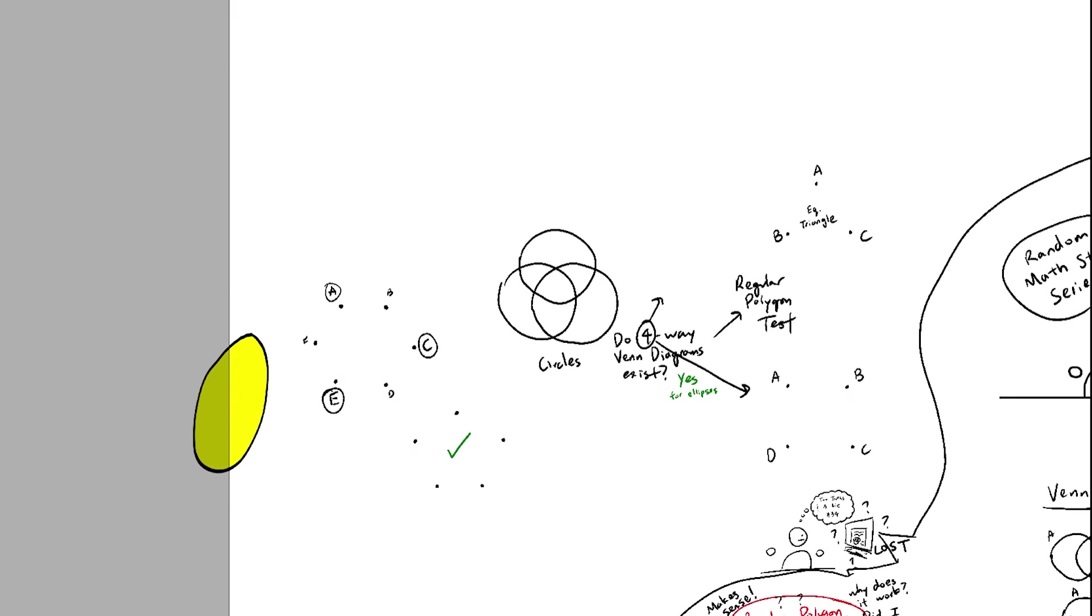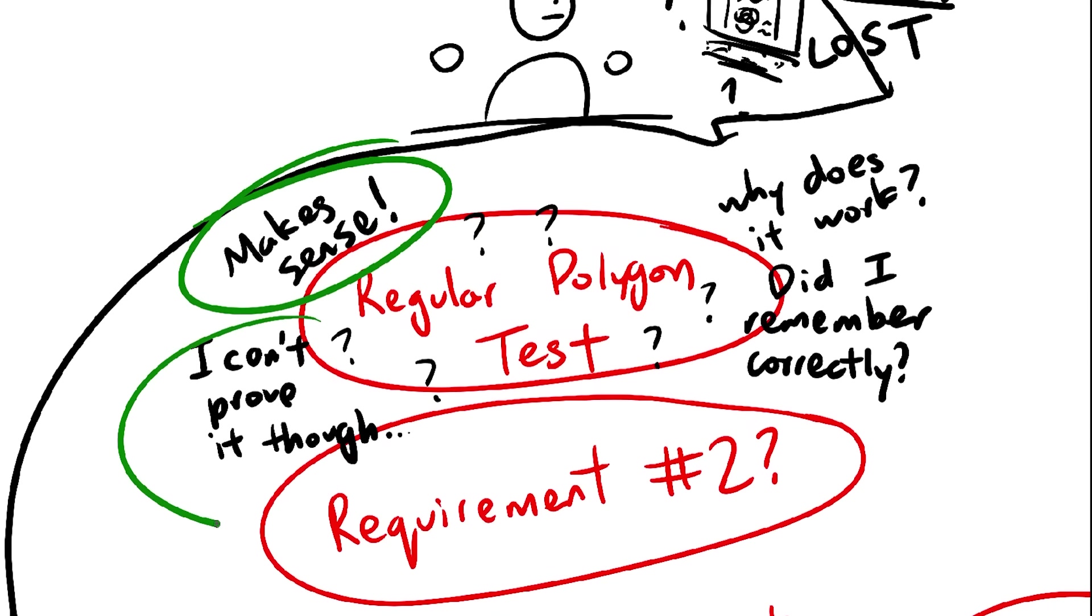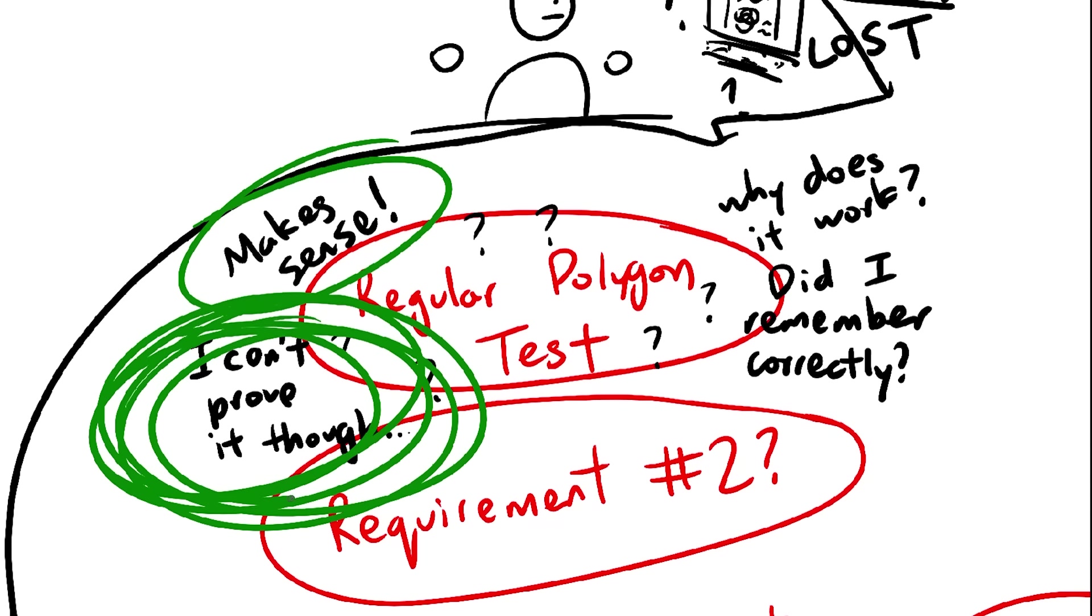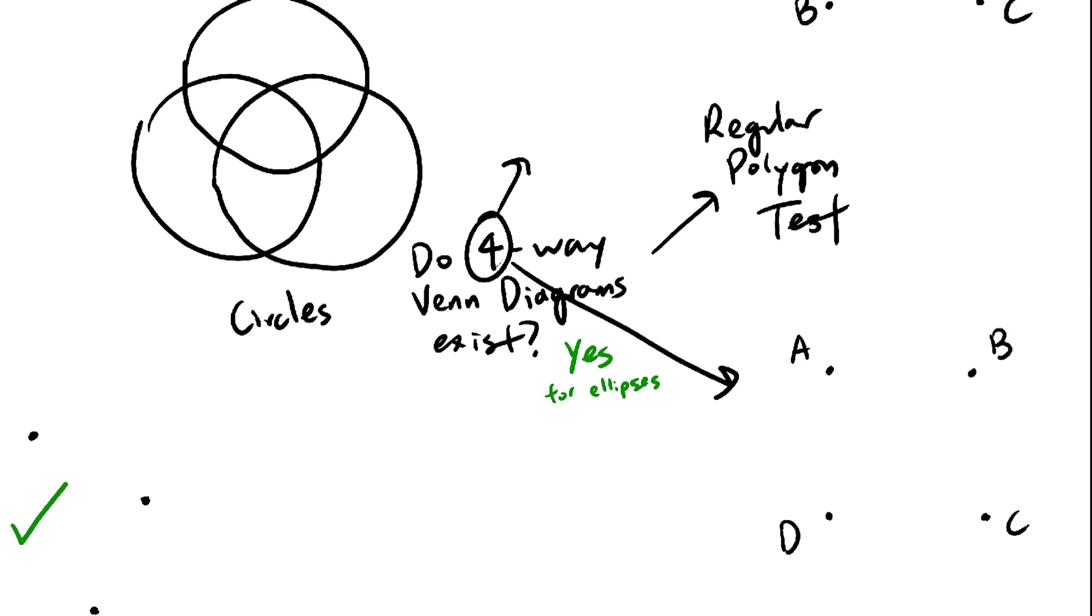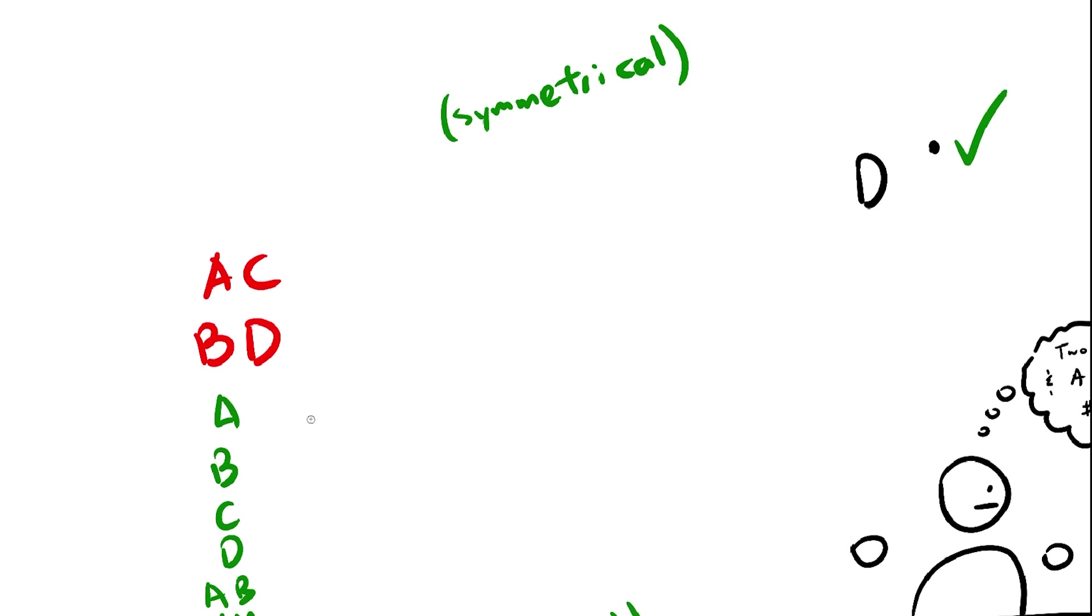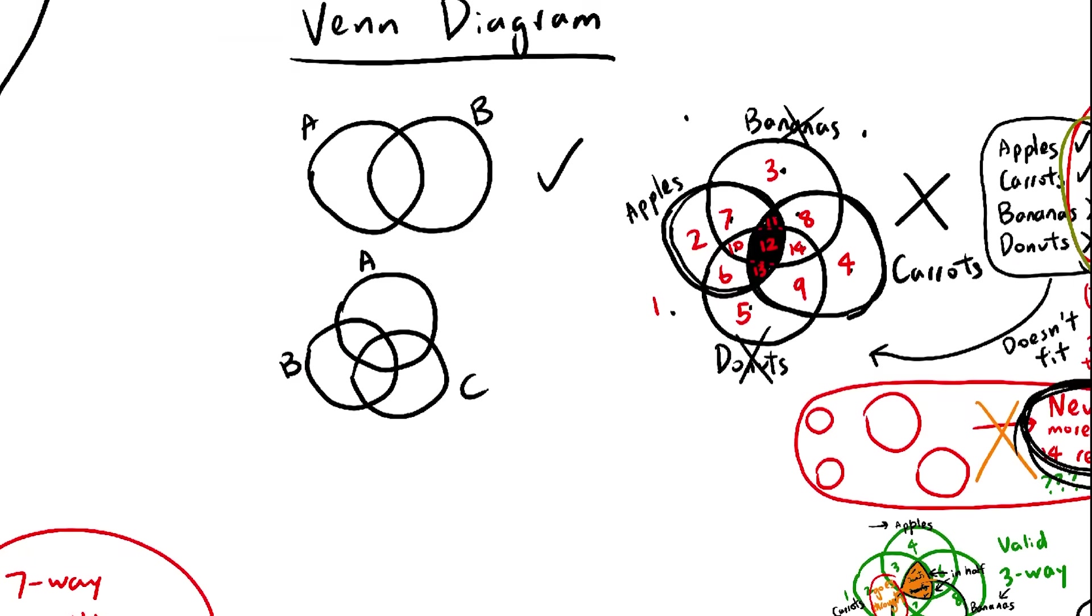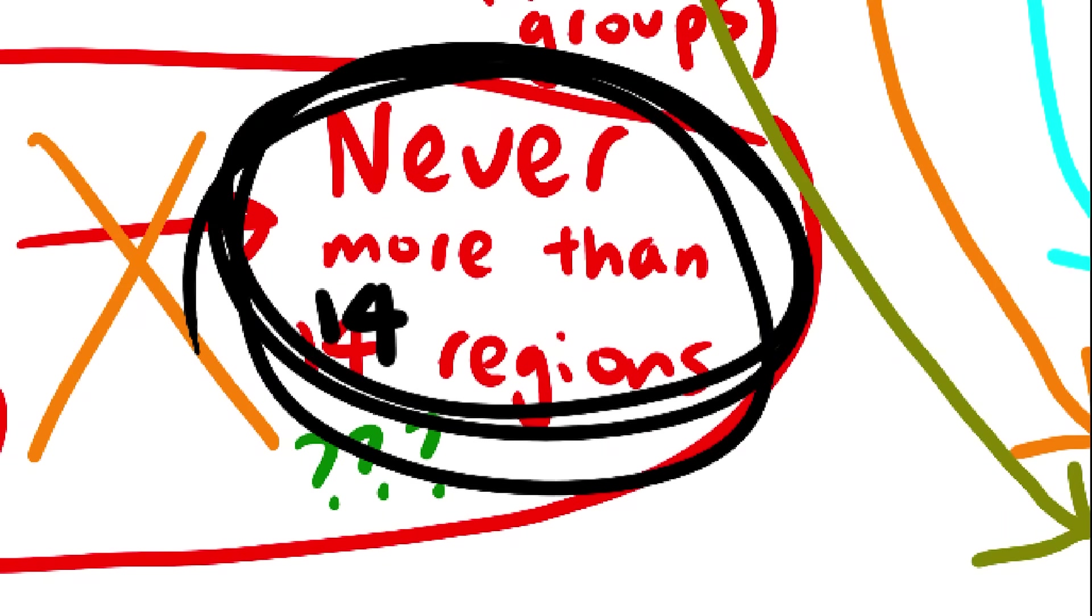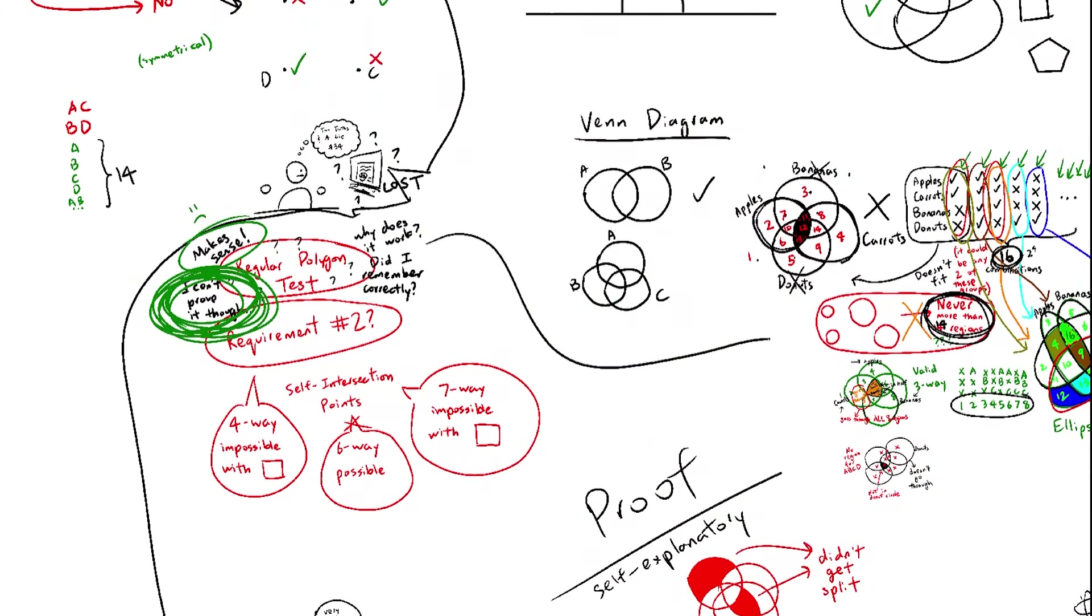Do you see what I mean now when I was yelling earlier? I feel like there's a really clever proof for why the regular polygon test works, but I just can't find it. The connection is so close, but I just can't find it. Oh, and that's not even the end of it. Go back to the 4-way Venn diagram using circles. You know how this combination of points doesn't work? There's one more that doesn't work, if I want B and D to be in the circle, but not A or C. So, there are two combinations that don't work, and 14 that do. Guess what? There's a maximum of 14 regions in a 4-way Venn diagram. There's something going on here.